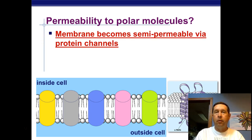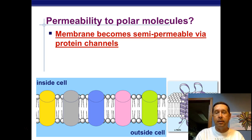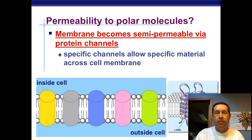Without the transmembrane proteins — the carrier proteins and such — there would be no way for polar molecules to pass through the cell membrane and get in and out of the cell. There are specific channels for specific materials, and each protein carries specific types of molecules across the cell membrane.